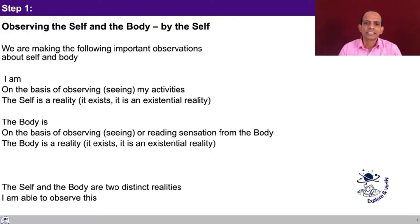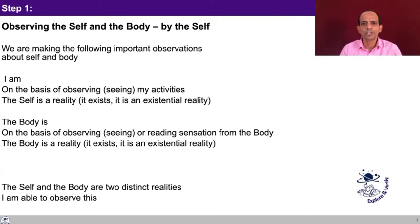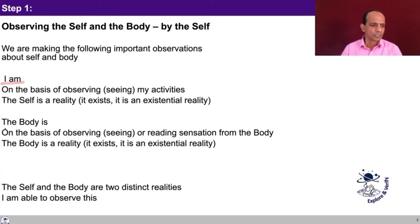The self is a conscious entity, the body is a material entity. But leave out these words — consciousness and material — and try to see whether the two are the same reality, one the effect of the other, or the two are distinct realities. Unless we are able to see this, confusions continue and those confusions do not allow us to examine things further. This is a very important aspect of reality and something you have to observe by yourself. To reiterate: I am, the body is, and the two are two distinct entities — distinct realities.